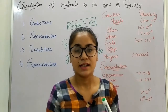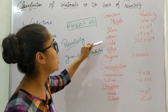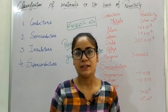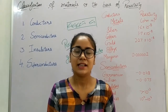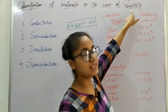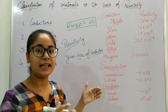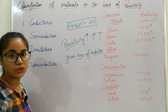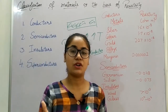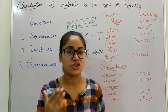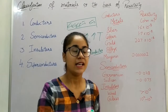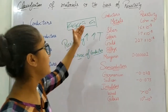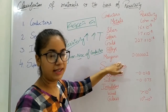Metals and alloys are referred to as conductors because their resistivity is low. Because they have low resistivity, they allow electrons to move freely. Resistivity increases with increase in temperature. We know that the resistivity of a material depends upon the nature of the material and the temperature, so as temperature increases, resistivity increases.